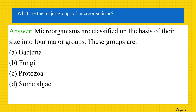Question: What are the major groups of microorganisms? Answer: Microorganisms are classified on the basis of their size into four major groups. These groups are bacteria, fungi, protozoa, and some algae.